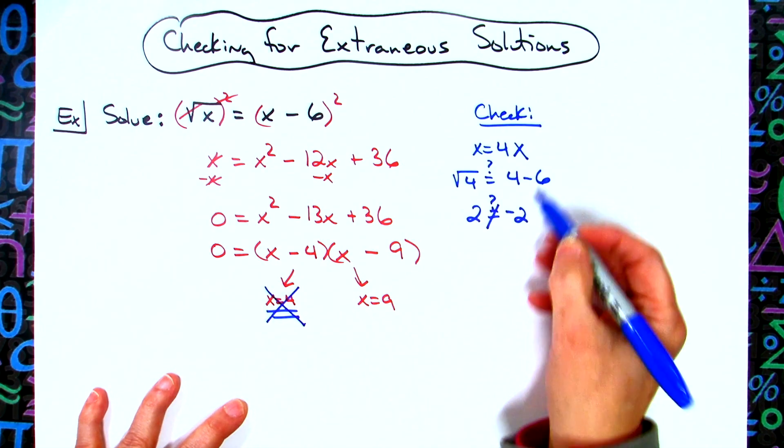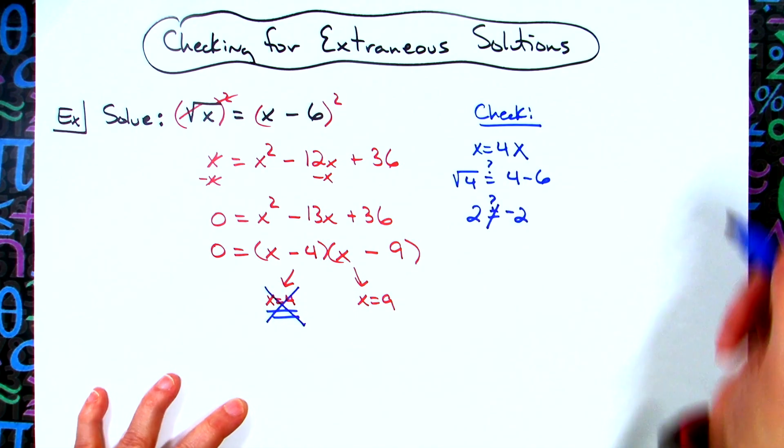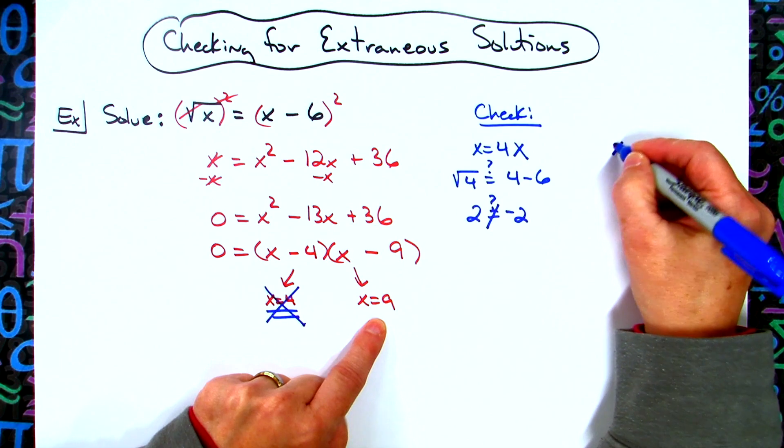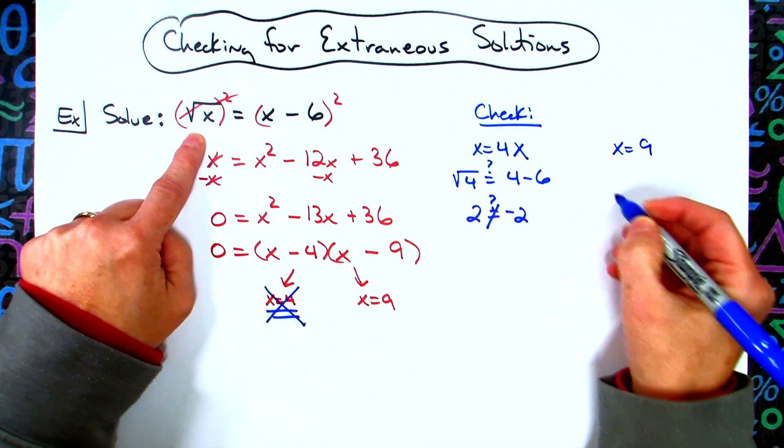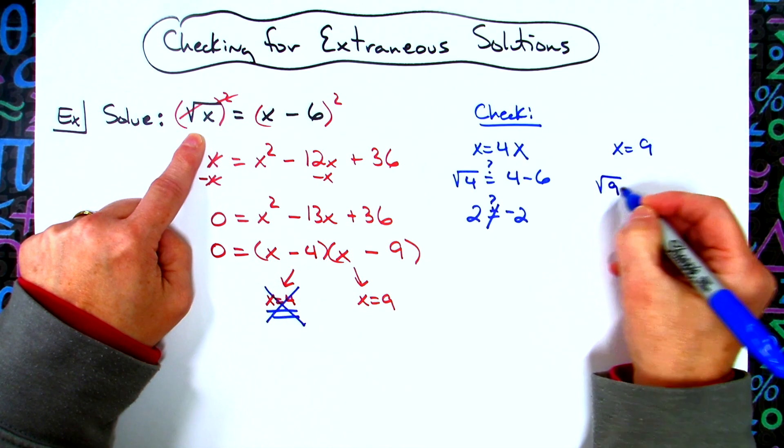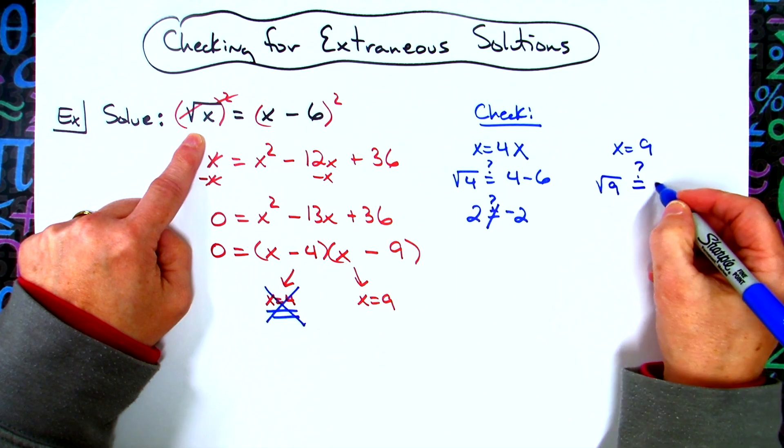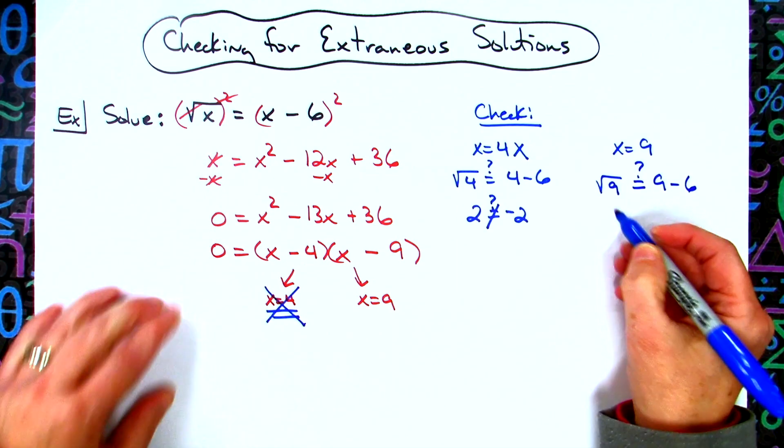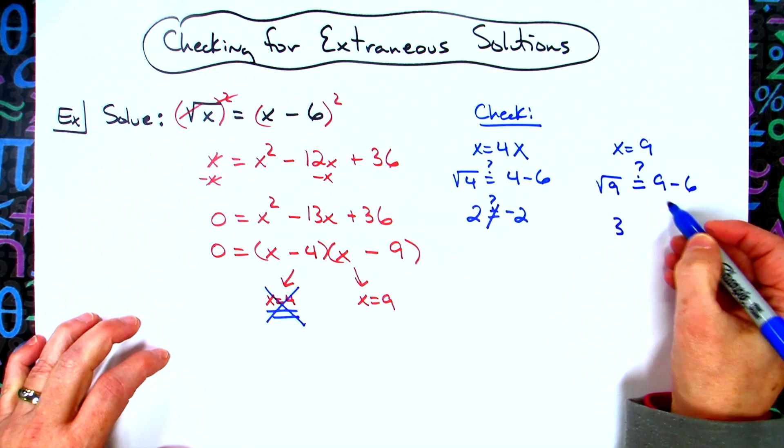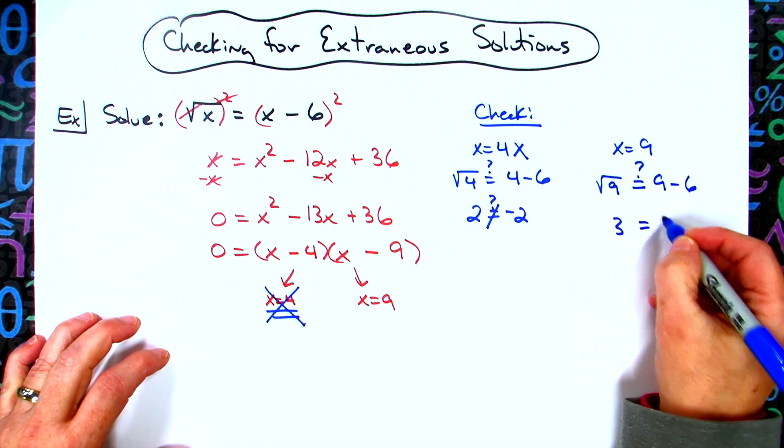Now we're going to check x = 9. We'll plug that in, so square root of 9, does that equal 9 - 6? Square root of 9 on this side is 3. 9 - 6 on this side is 3. It does check.